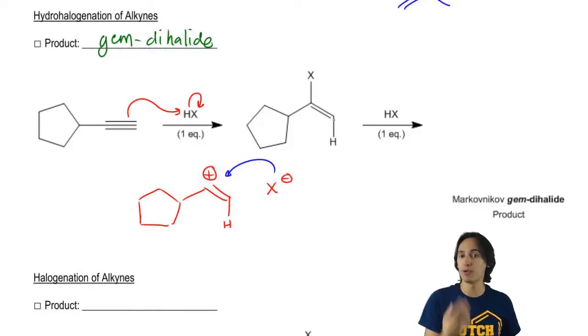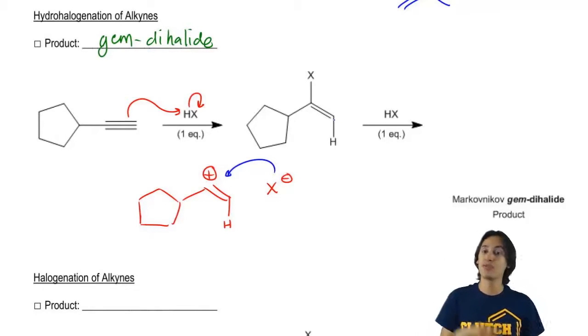But if I expose it to more than one equivalent, for example, let's say that I exposed it to two equivalents total, then it could react again.